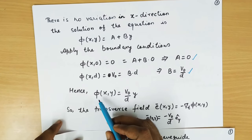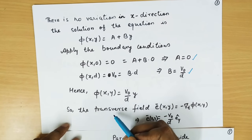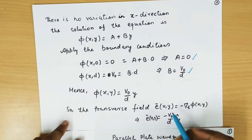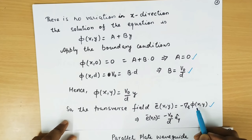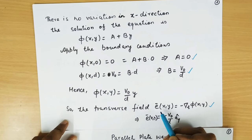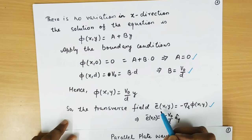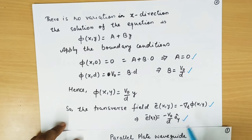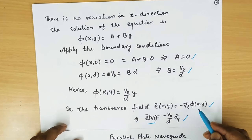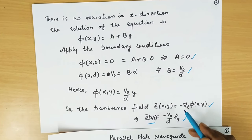So the potential is phi(x,y) equal to V0 over D times y. We can find the electric field by using the gradient formula: the electric field equals the negative of the gradient of potential. In this case it is the transverse potential, so the transverse electric field is the negative of the gradient. We find that the electric field equals minus V0 over D in the a_y direction, since the potential varies only in the y direction.